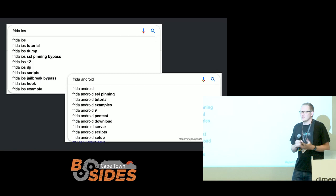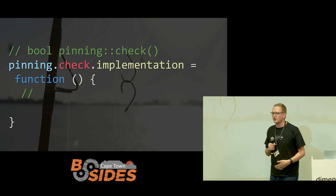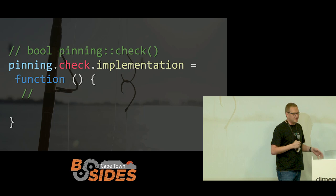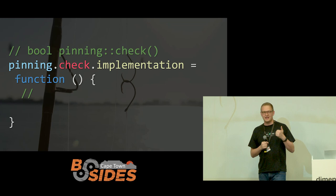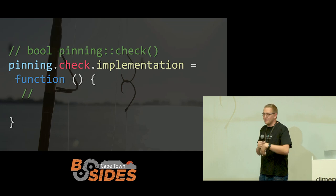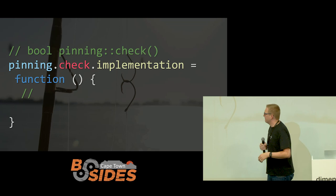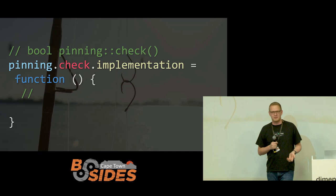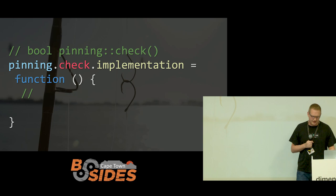Let's look at what these bypasses actually look like. There will be a class, for example called 'pinning', with a method called 'check'. With Frida's implementation property, we get access to that method's invocation — we can see the entry point, modify the method logic, and change the return value. The signature for our method returns a boolean, so to bypass the pinning check we simply return true, meaning the check was successful. It's a rudimentary example, but gives you the idea.